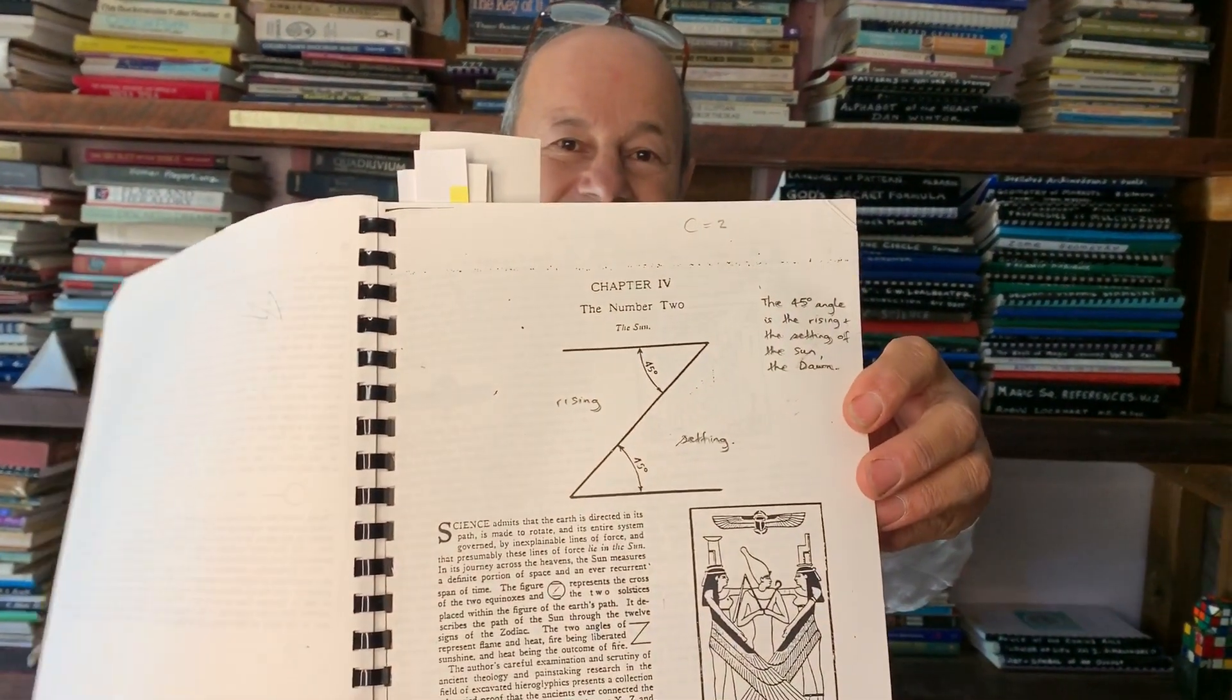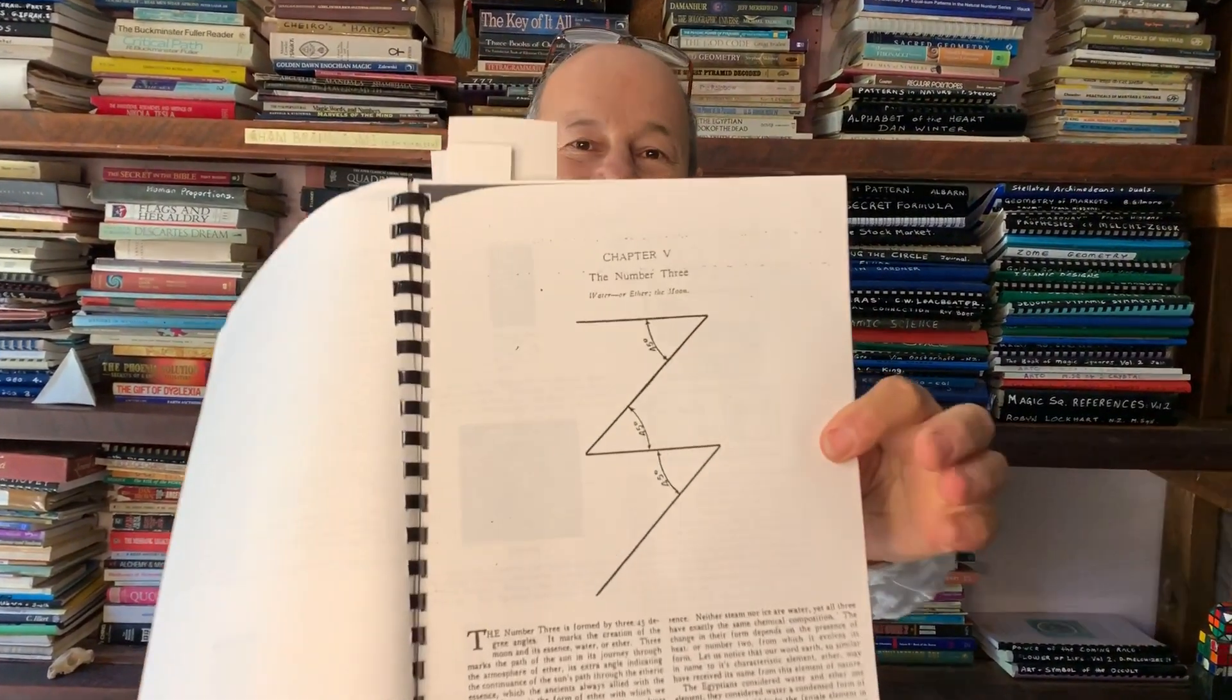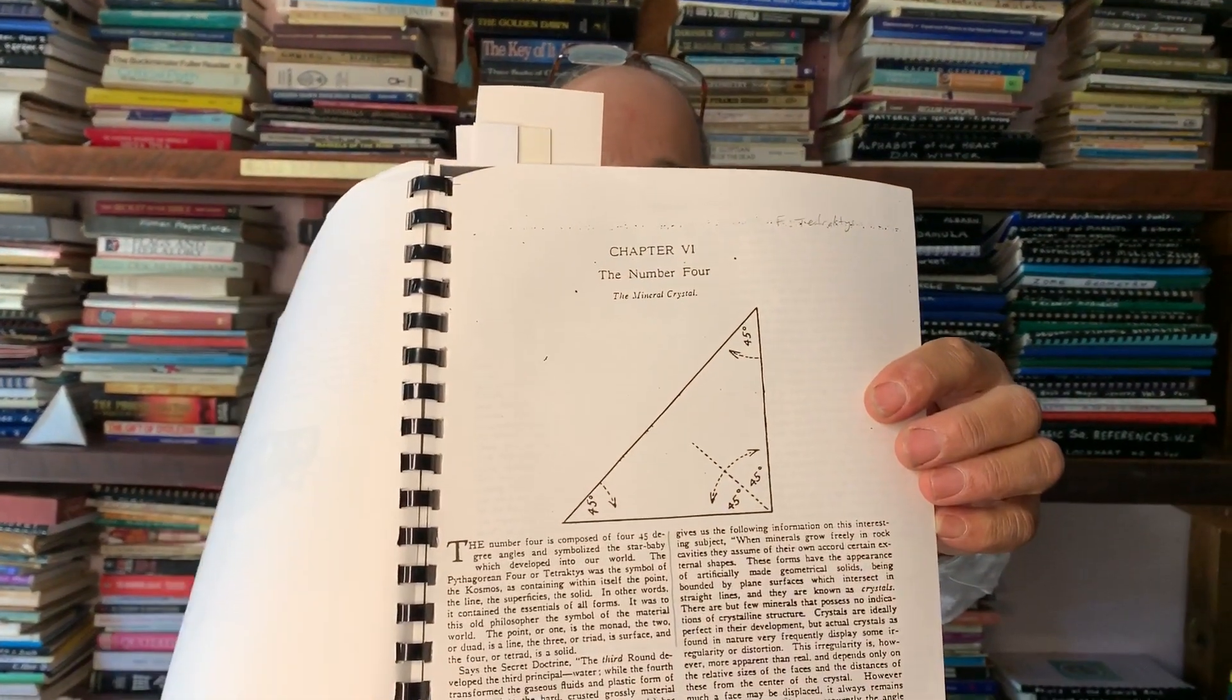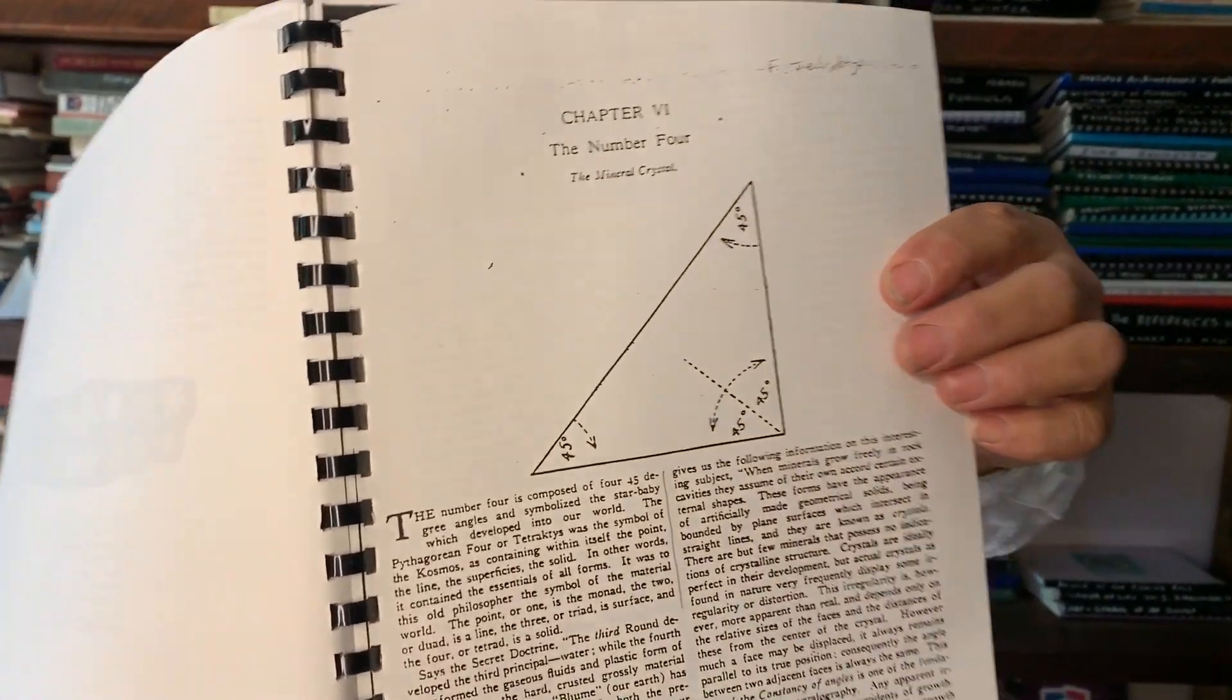And then if you wanted to look at say the number two, so number two would look like this Z shape because it's got two lots of 45 degrees. And number three, so number three, this is a whole new theory of the origin of where did one, two, three come from. It's the memory of 45 degree angles. So number four, so number four would be four 45 degree angles like that. The 90 degree is two 45s.